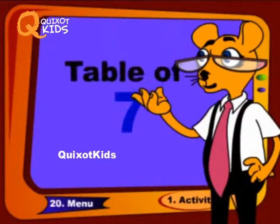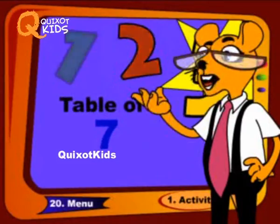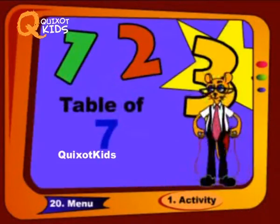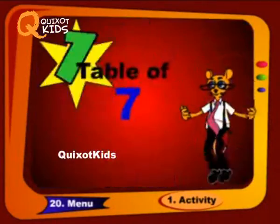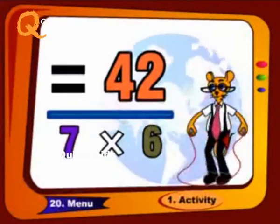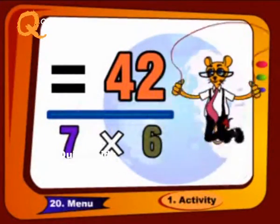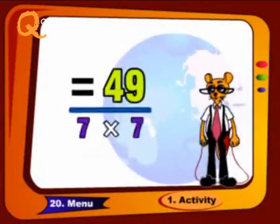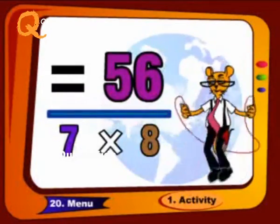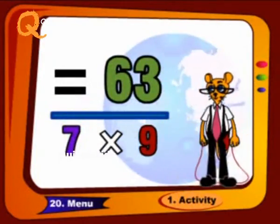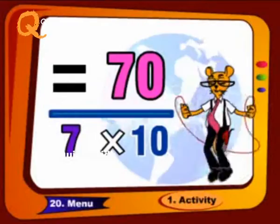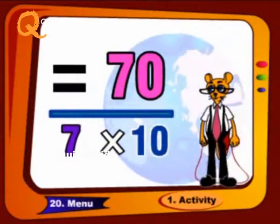Now we will proceed further. 7 6's are 42, 7 7's are 49, 7 8's are 56, 7 9's are 63, 7 10's are 70.